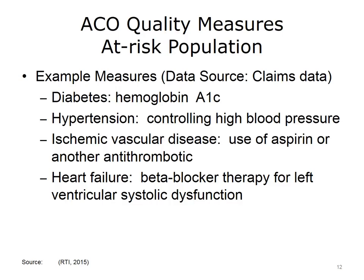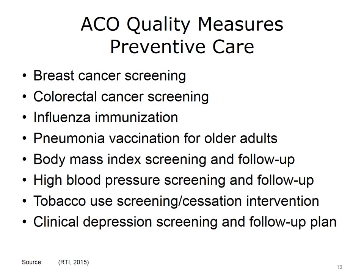The at-risk population domain includes eight measures focused on ACO patients in the following at-risk populations: coronary artery disease, diabetes, heart failure, hypertension, ischemic vascular disease, and mental health. In each at-risk population, there are measures of various patient care processes and outcomes. These measures are intended to keep ACOs focused on improving the clinical care of patients with these diseases. They are collected through claims data.